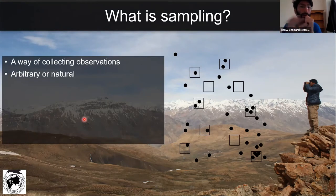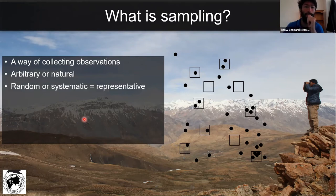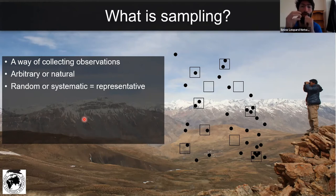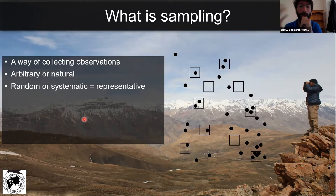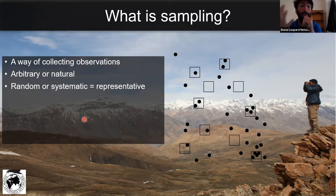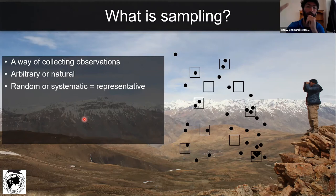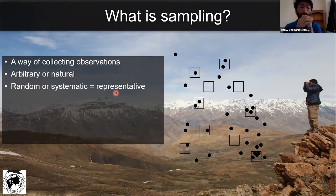Sampling can be completely arbitrary or natural — you don't put any system to it. Or you can randomize it or make it systematic, representative of certain factors in a landscape. For instance, in mountain landscapes, if you want to survey for Argali, which is a wild sheep found in more open and rolling habitats, you would have to ensure that you systematically sample all the rolling habitats. Or for Ibex, which is a more cliff-loving species, in order for it to be representative, you have to make sure you do sample those cliffs. That's what representative sampling really means.